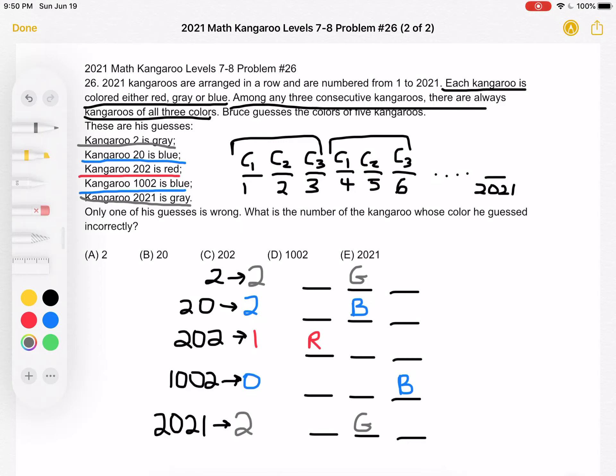And what we can see is from the problem, we know that only one of his guesses is wrong. But we have gray as color 2 twice and blue as color 2 once. So that is the wrong statement. Blue cannot be color 2. So this is the incorrect guess. And the question is asking us for what is the number of the kangaroo whose color he guessed incorrectly? That's kangaroo number 20 and that is answer choice B.